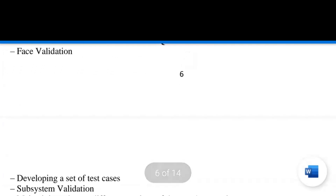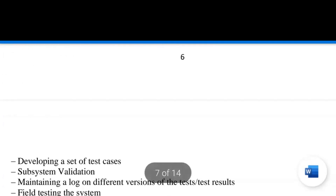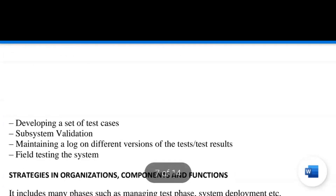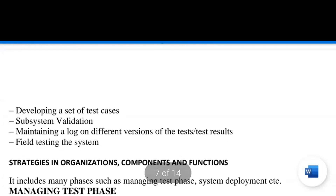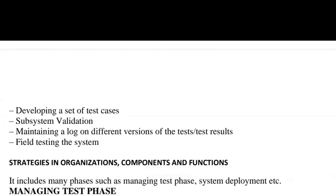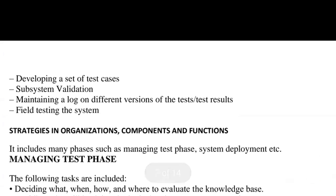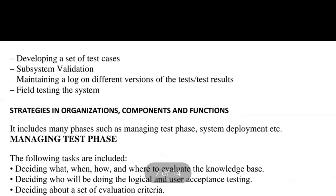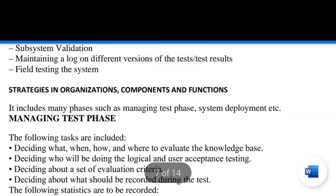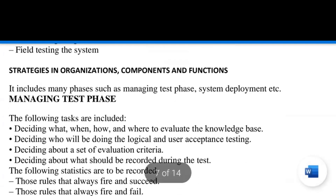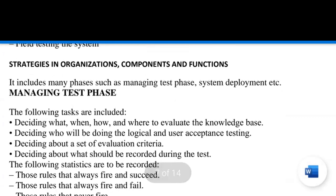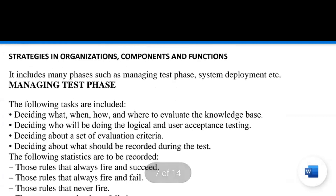User acceptance test techniques include face validation and system validation. There should be a set of many test cases, and based on those, field testing should be carried out. A testing log should be maintained so that results can be analyzed easily at later stages.